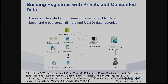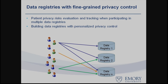One goal is that some patients openly consent their data, and by combining this consented data with private data, we can build a registry with much higher accuracy than using private data alone. Another component is evaluating and tracking patient privacy risks as they participate in multiple studies, accumulating privacy risk and communicating this to patients.